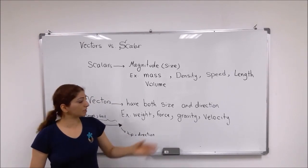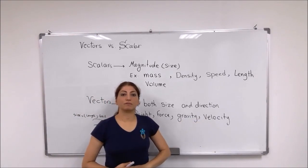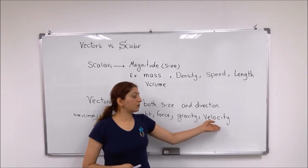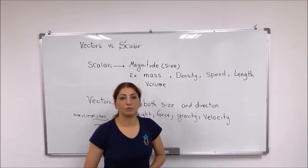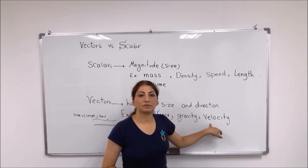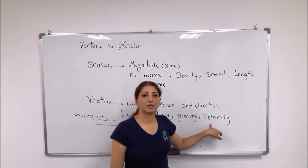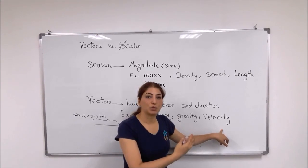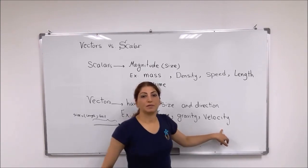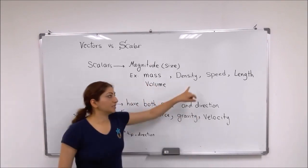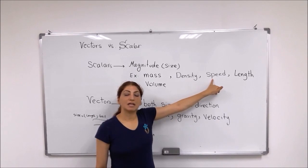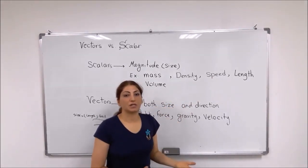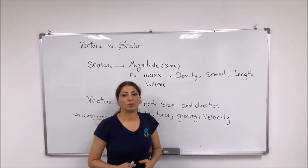For example, if I'm using my car to travel from one point to another, when we're talking about velocity, I want to know how fast I'm going and what is my direction — am I going to the east, south, or north? So velocity requires both direction and size. The difference between speed and velocity is that speed is a scalar quantity — I only want to know how fast I go, not what direction I'm moving.